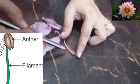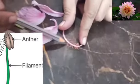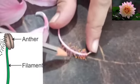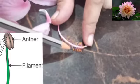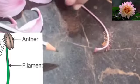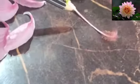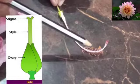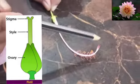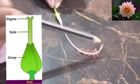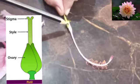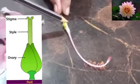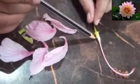The male part of the flower is called stamen. It has filament and anther. The female part of the flower is called pistil. It has stigma, style and ovary. Hope you understood the parts of the flower.